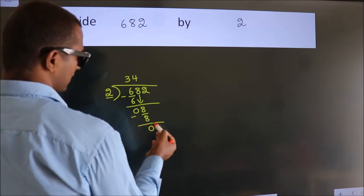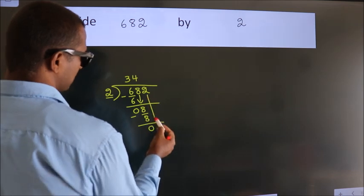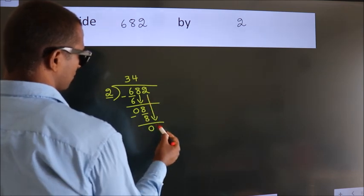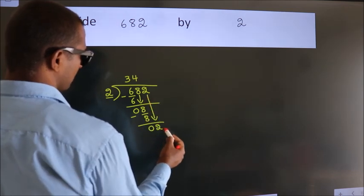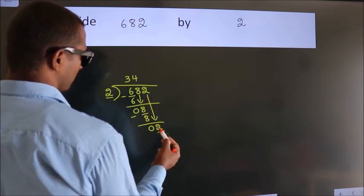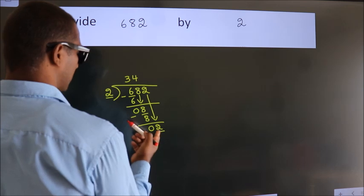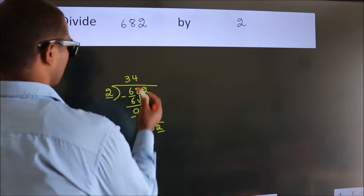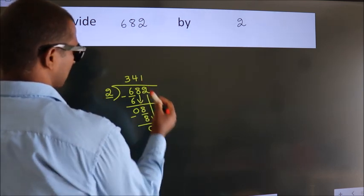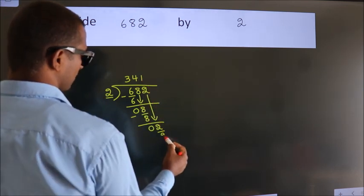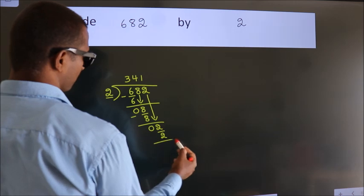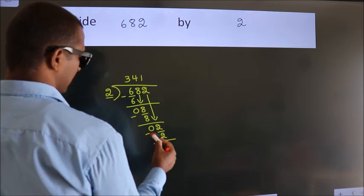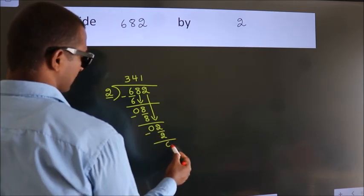After this, bring down the beside number. So 2 comes down — so 2. When do we get 2? In the 2 times table: 2 ones are 2. Now we subtract. We get 0.